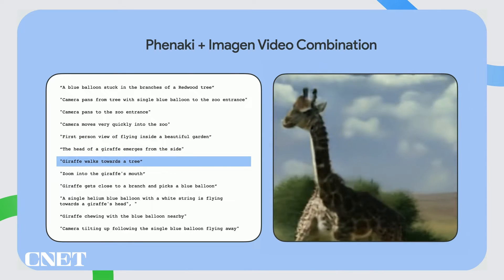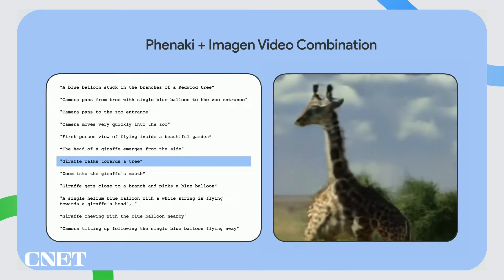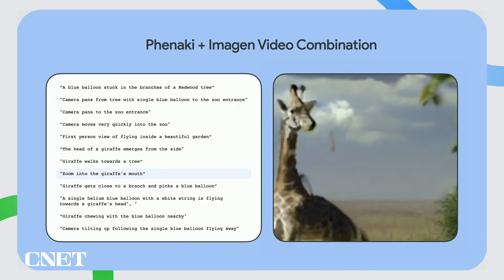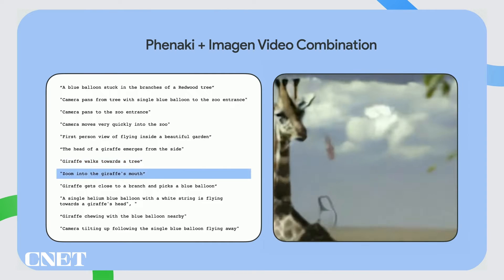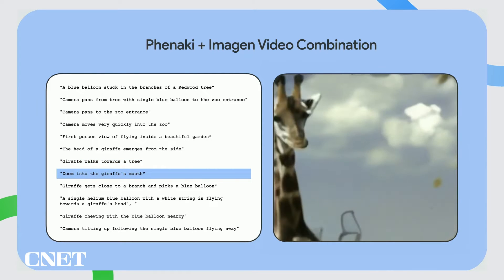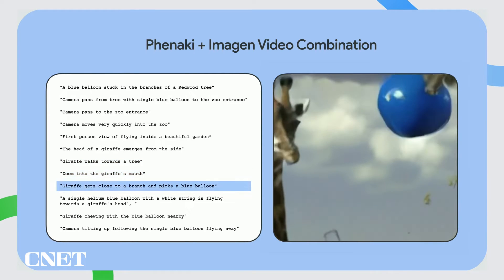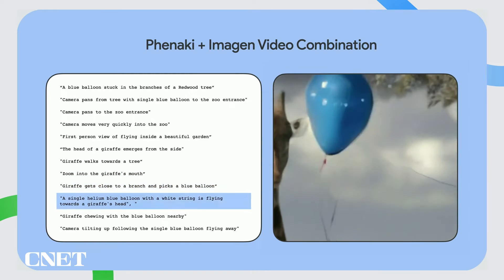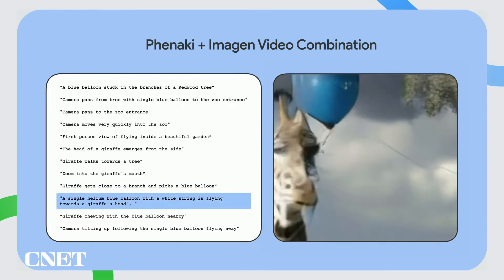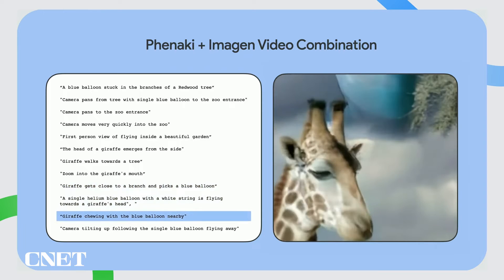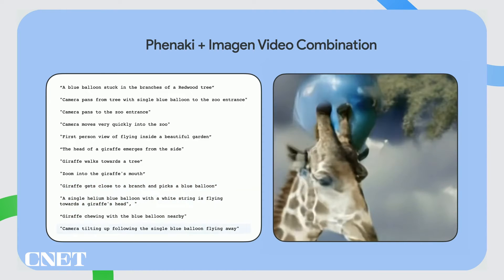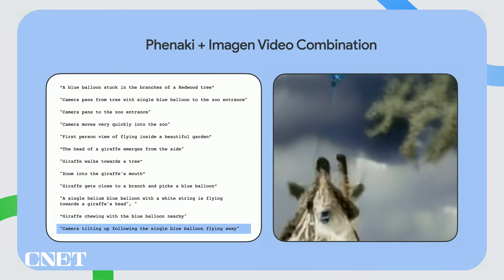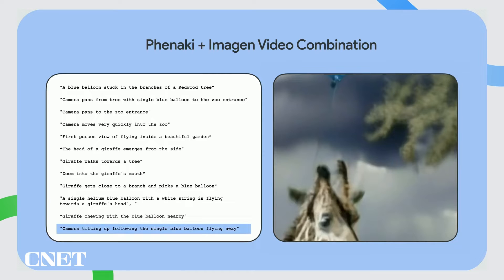Giraffe walks towards a tree. Zoom into the giraffe's mouth, of course. Giraffe gets close to a branch and picks a blue balloon. A single helium blue balloon with a white string is flying towards a giraffe's head. Giraffe chewing with a blue balloon nearby. Camera tilting following the single blue balloon flying away.